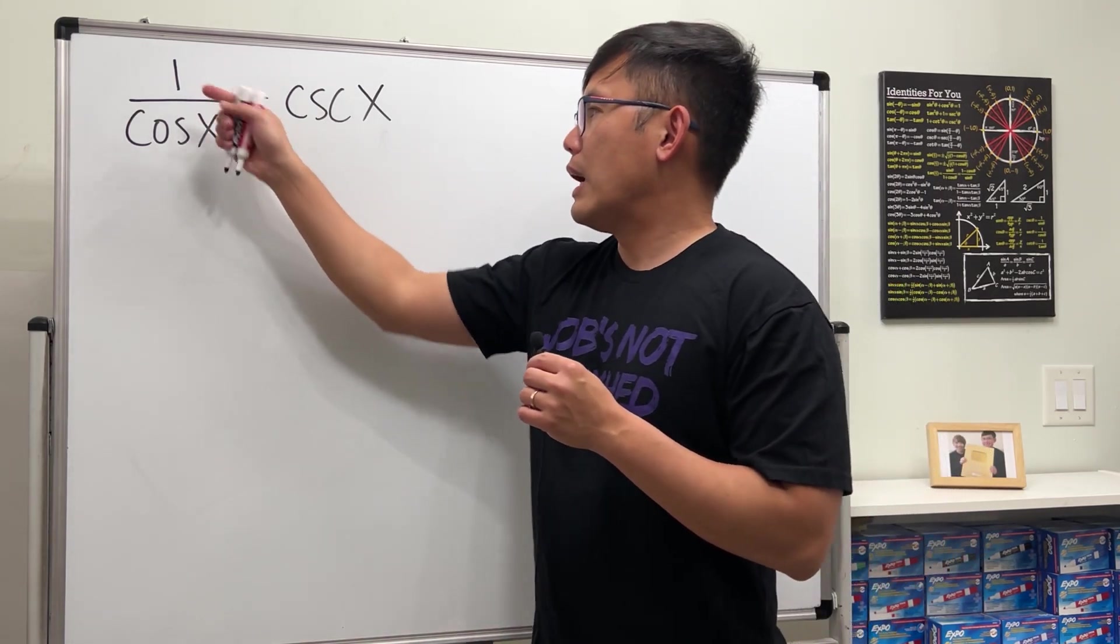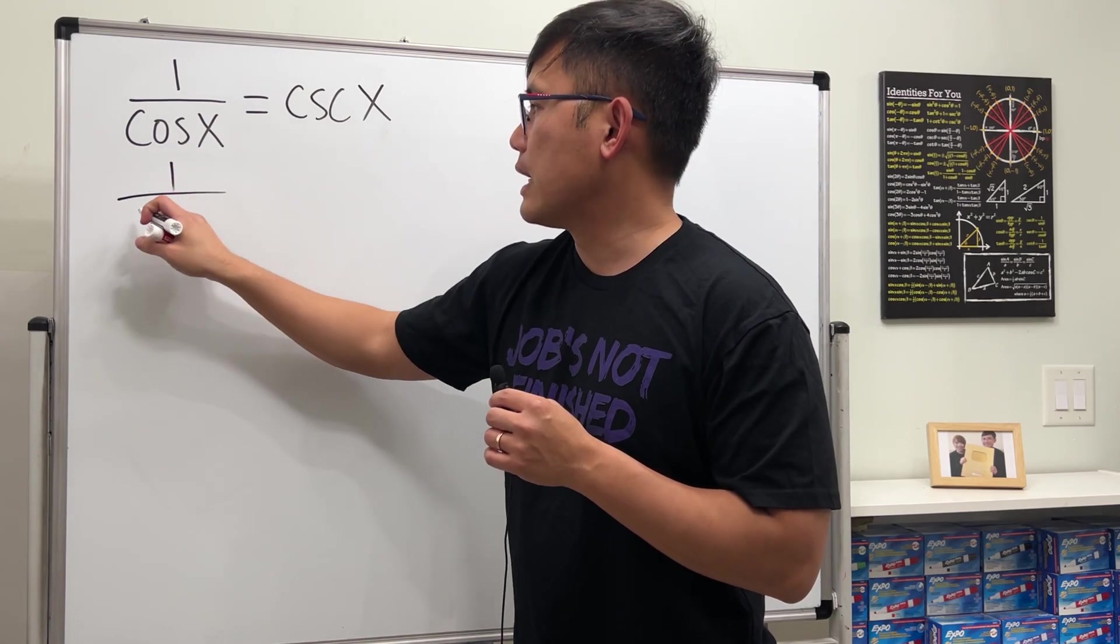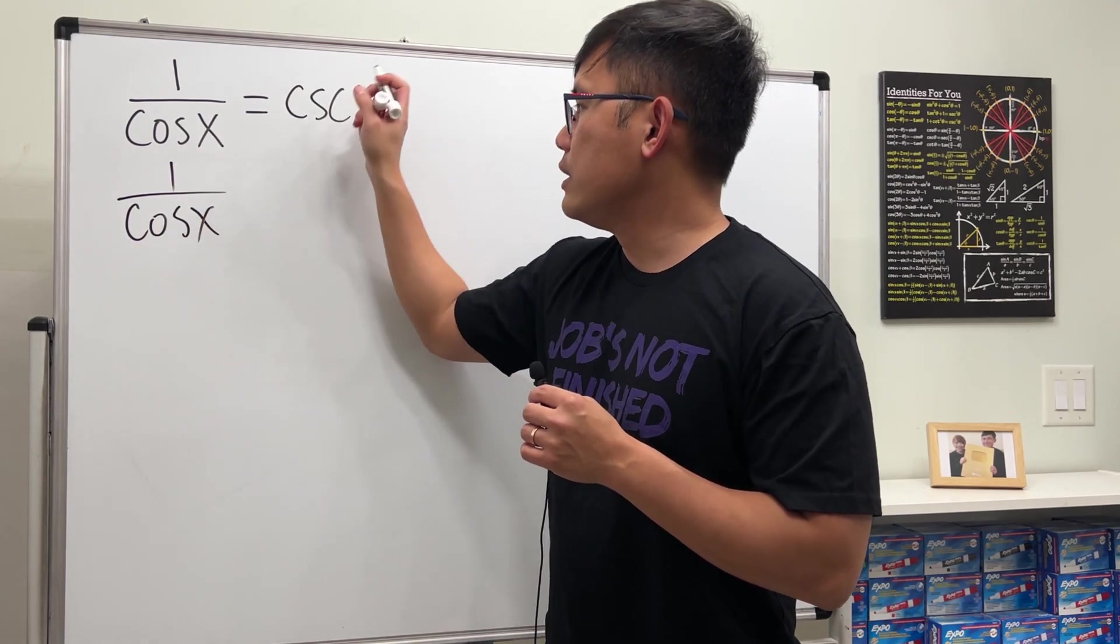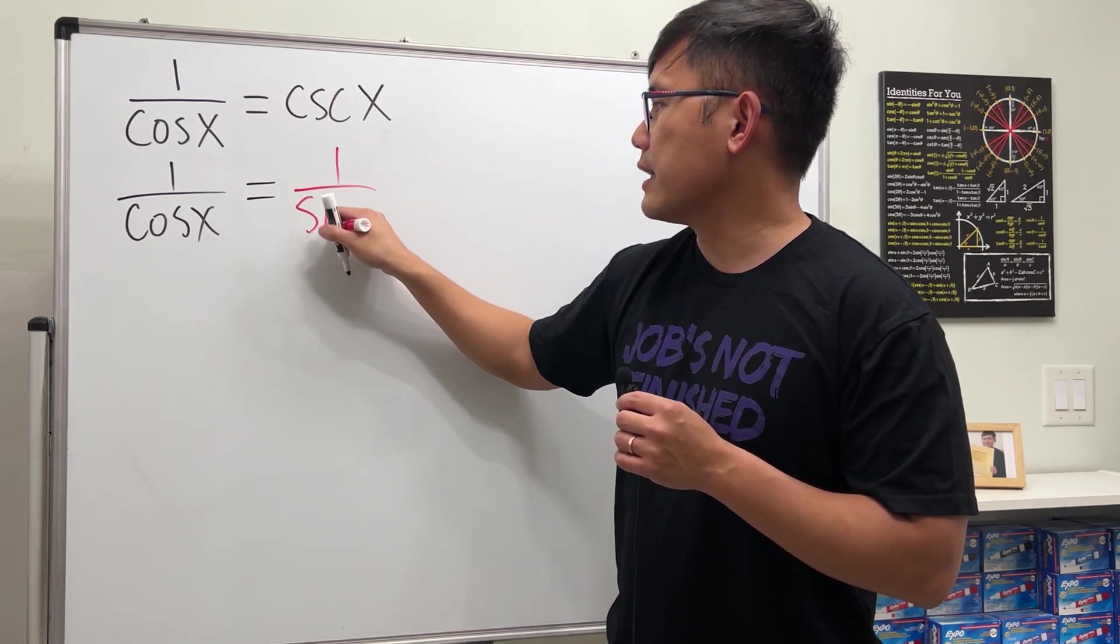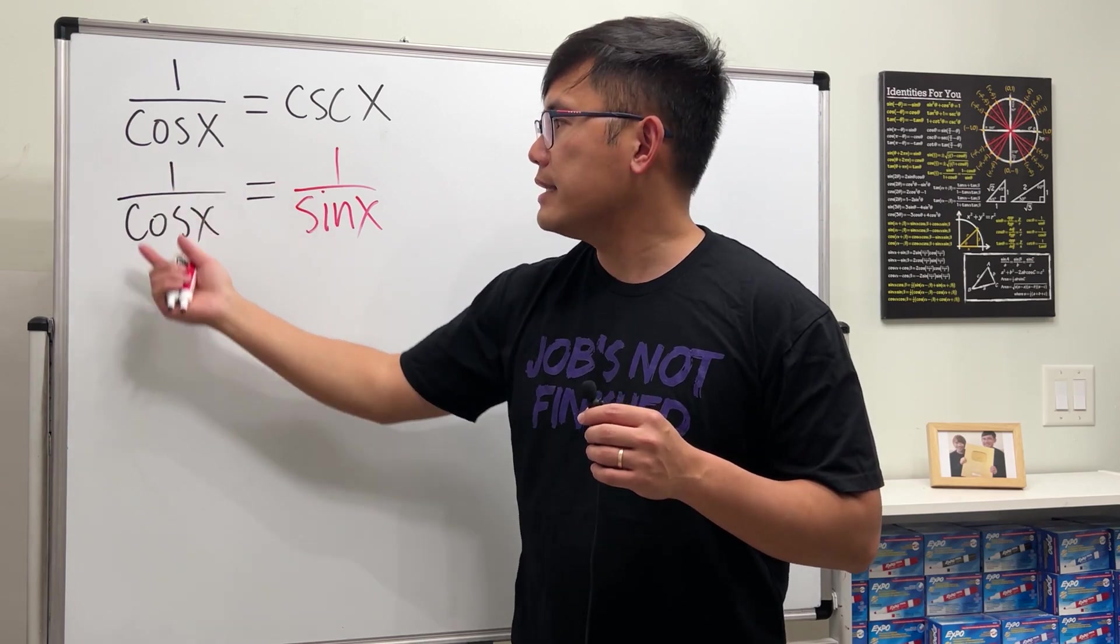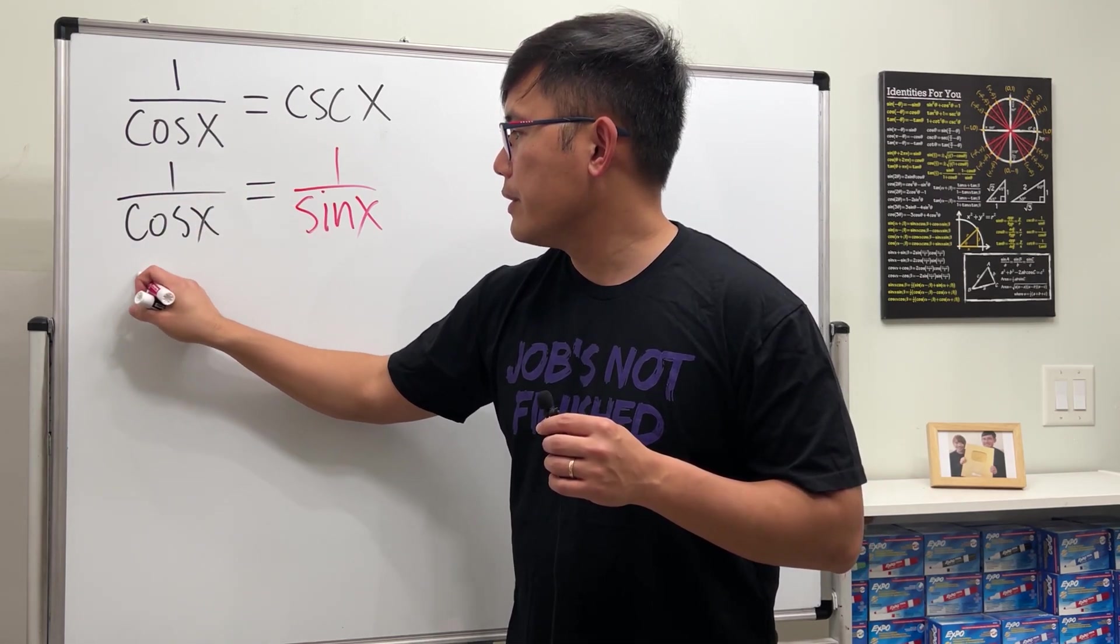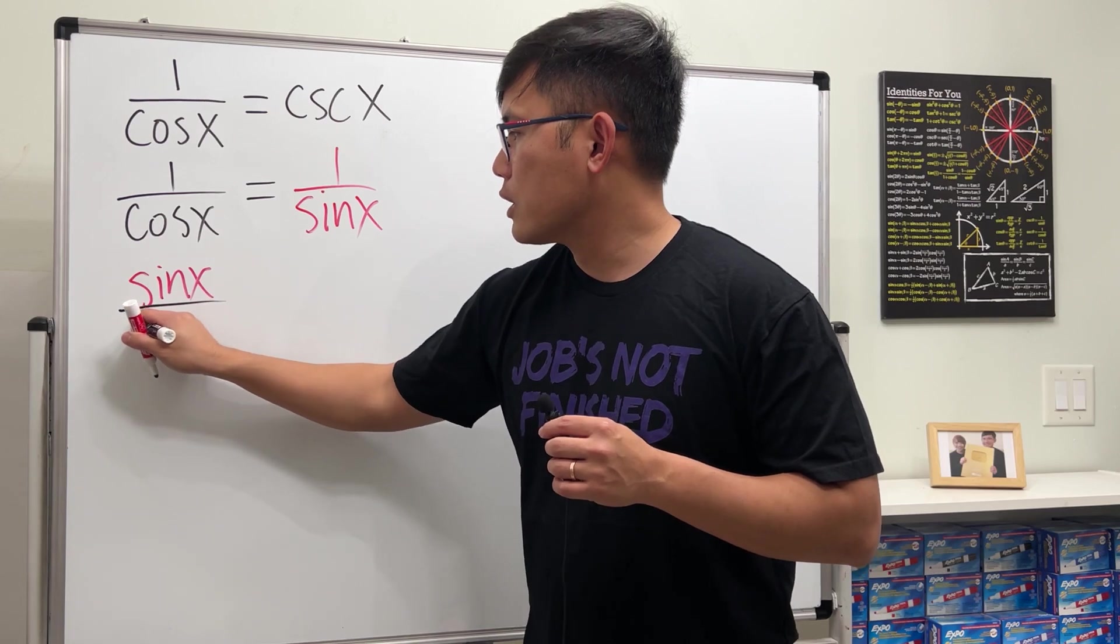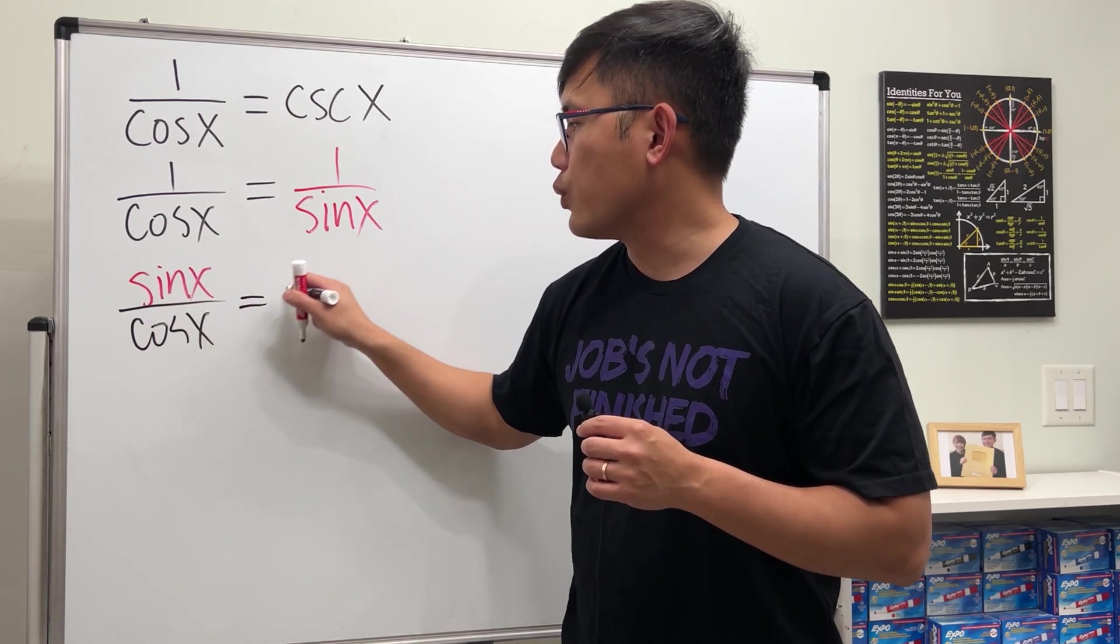Let me show you how. I'm going to keep 1/cos(x) as it is. But for csc(x), I'm just going to write it as 1/sin(x). Next, let's multiply sin(x) on both sides. So we will have sin(x)/cos(x), and that's equal to 1.